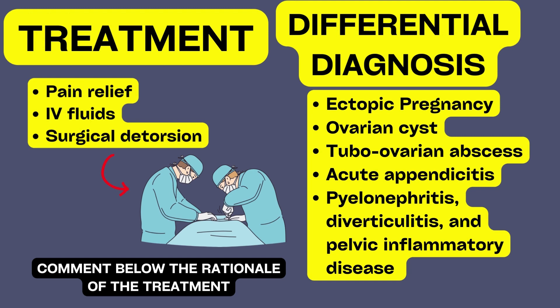Right-sided pelvic discomfort, nausea, vomiting, and fever are all signs of appendicitis. Leucocytosis may be detected in lab results, and CT imaging should help distinguish it from ovarian pathology. Pyelonephritis, diverticulitis, and pelvic inflammatory disease are further differential diagnoses.